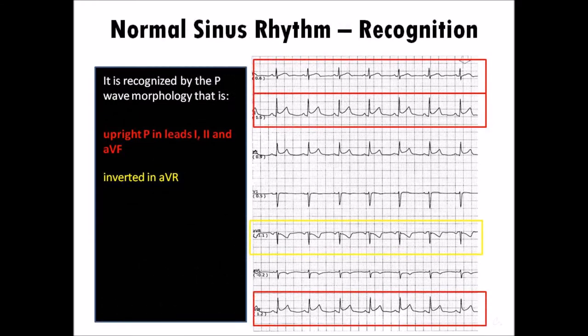Normal sinus rhythm is an impulse that originates in the sinus node. It is recognized with a P wave morphology that is upright in leads 1, 2, and AVF; inverted in AVR; variable in leads 3 and AVL; upright in leads V4 to V6 in 12-lead EKGs; and most often biphasic — positive and negative — in leads V1 and V2. There are minor variations in morphology related to the respiratory cycle. For EKG test-taking purposes, an upright P in lead 2 is basically sinus rhythm.